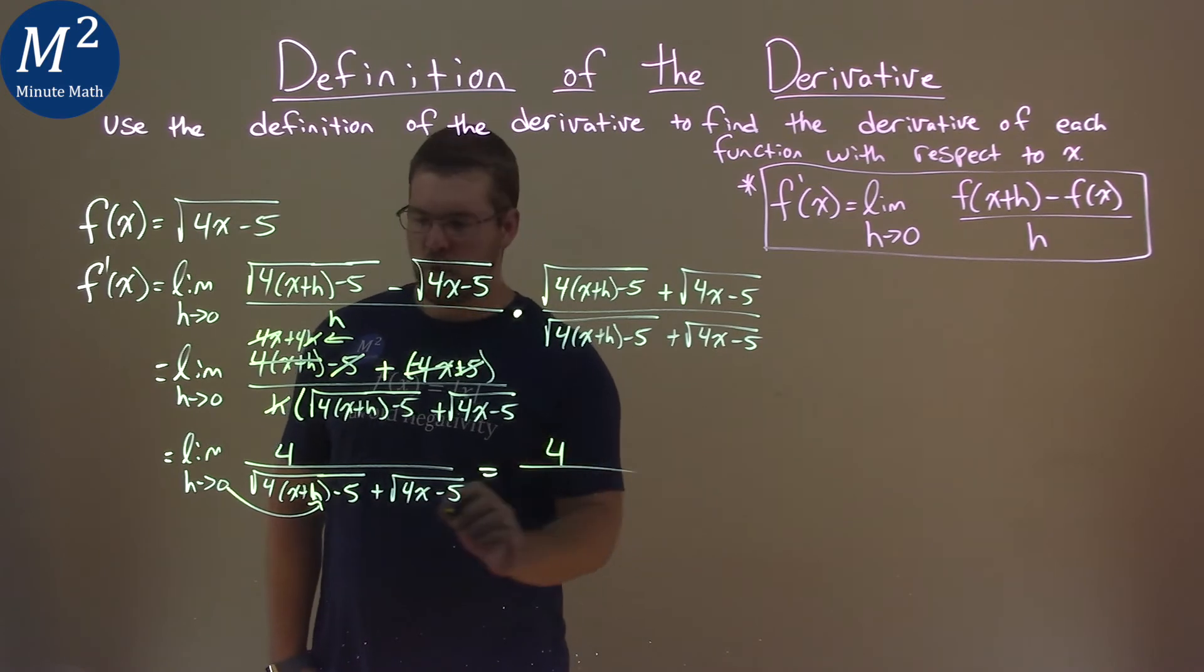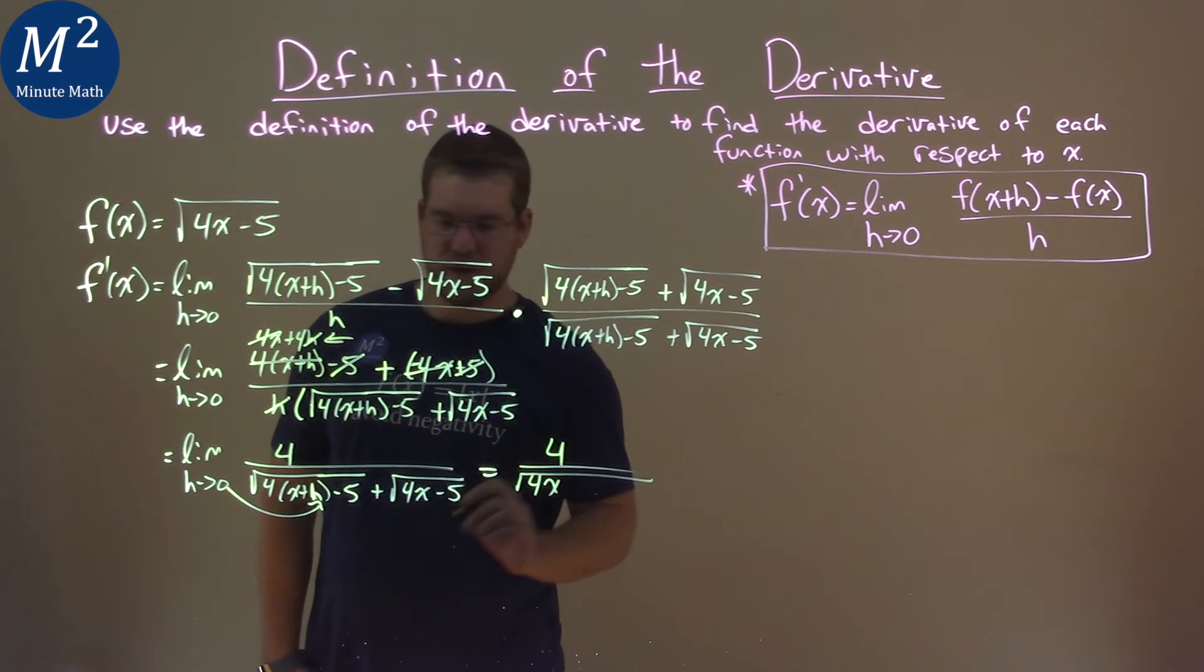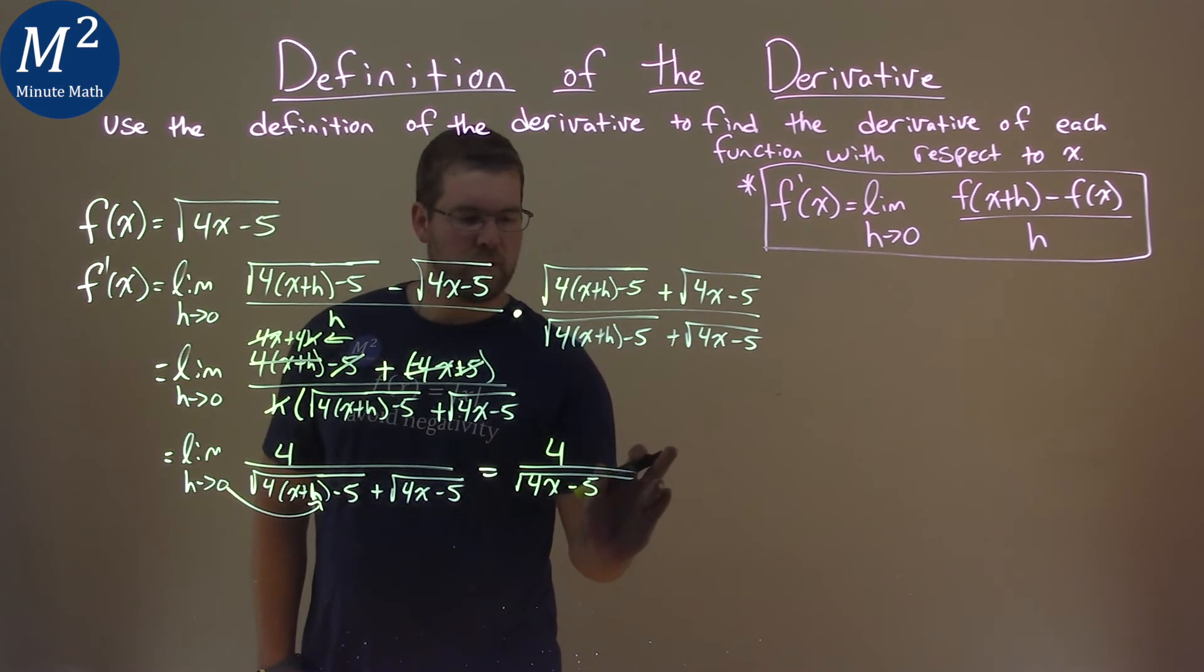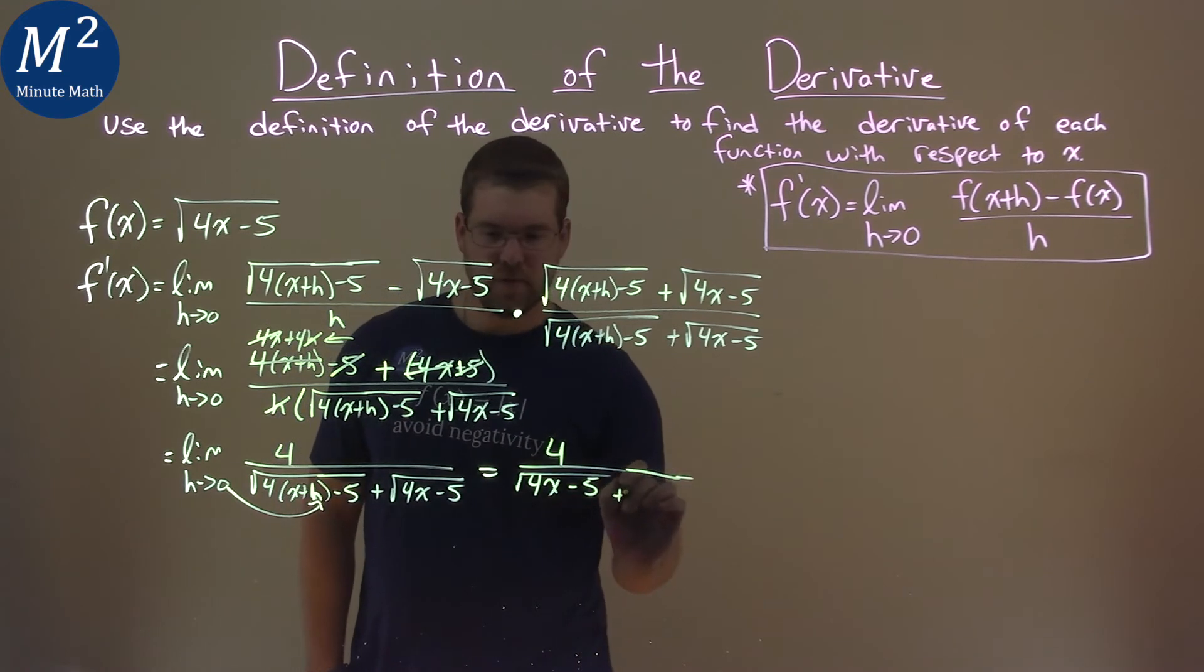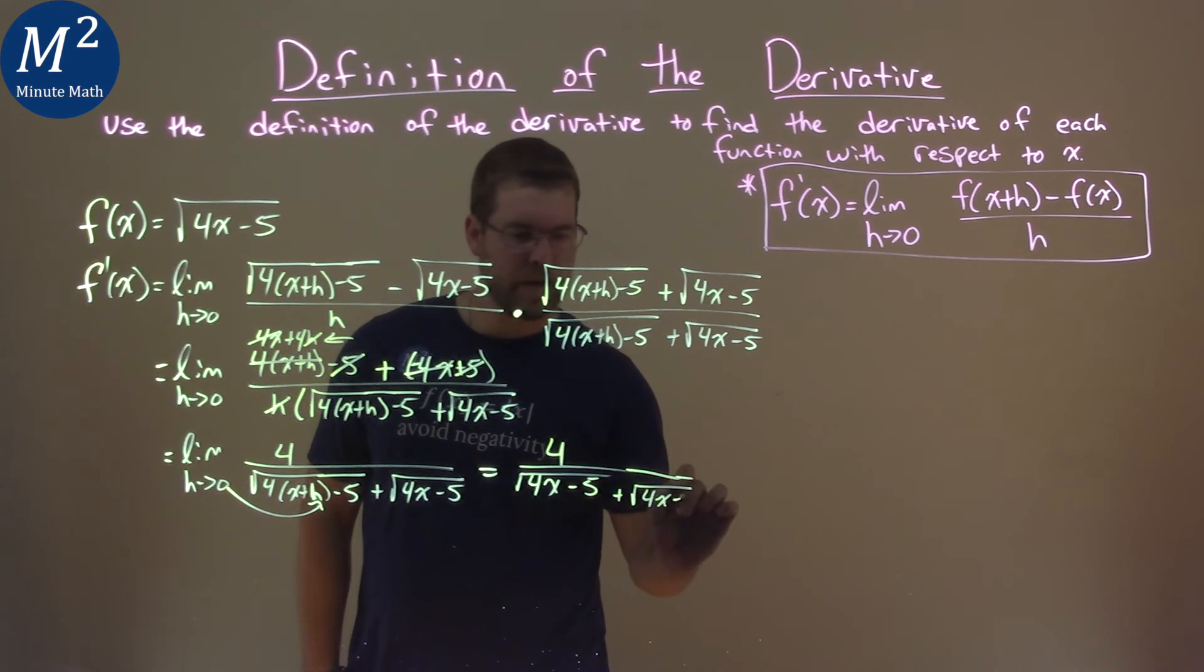So, we have 4 over 4 times x, 4x, and the square roots. Don't forget that. And then we use that 4x minus 5. Don't make the square root too long there, Sean. Don't get greedy. Then we have plus a square root of 4x minus 5.